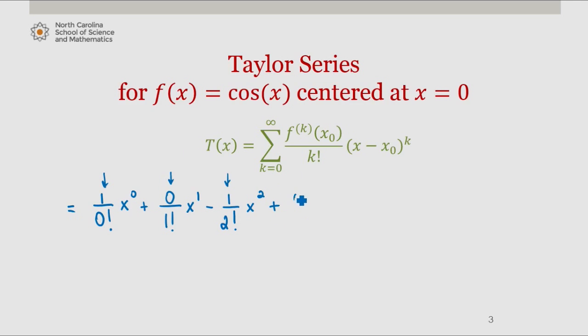Plus 0 divided by 3 factorial x to the third plus 1 over 4 factorial x to the fourth and so on.